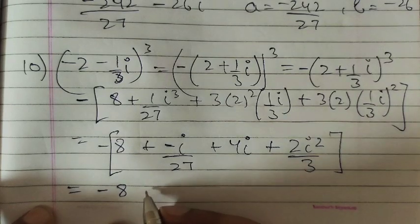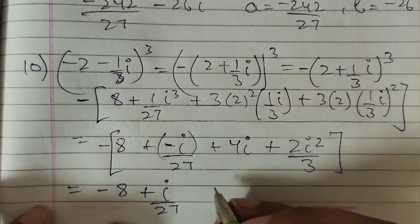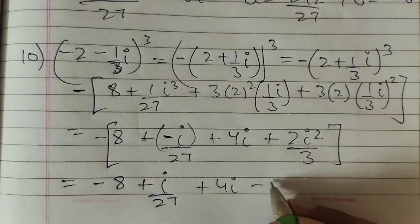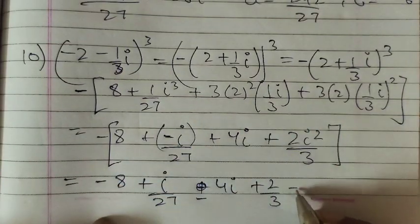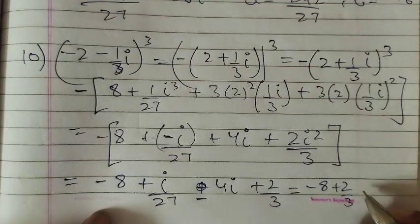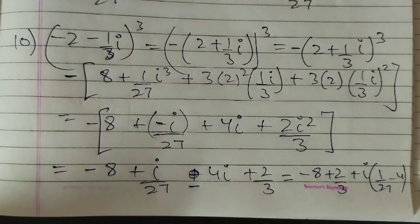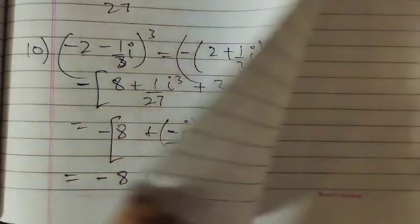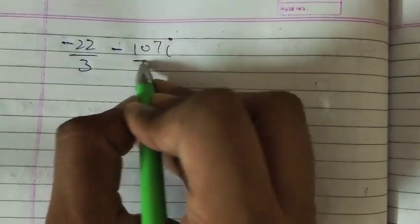Since ι² = minus 1, we get 2/3 × (minus 1) = minus 2/3. Now applying the outer minus sign and separating: real part is minus(8 minus 2/3) = minus 22/3 (taking LCM of 3). Imaginary part: minus(minus ι/27 plus 4ι) = minus ι/27 plus 4 → taking LCM 27 gives minus 107ι/27. So a = minus 22/3, b = minus 107/27.